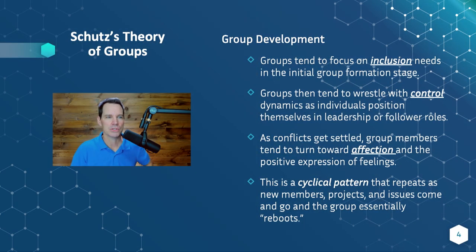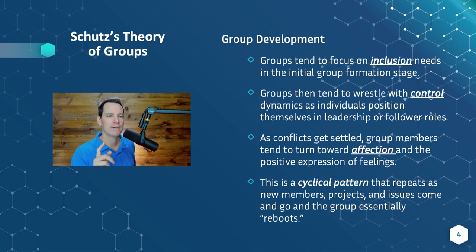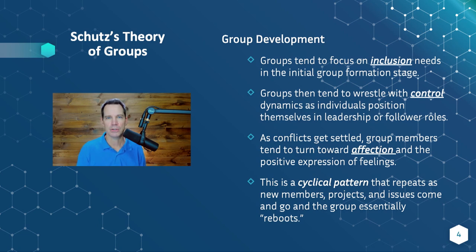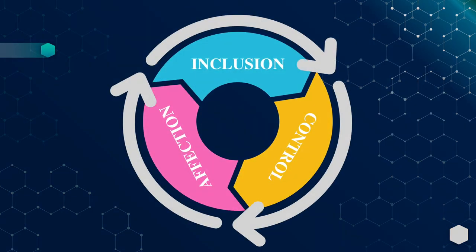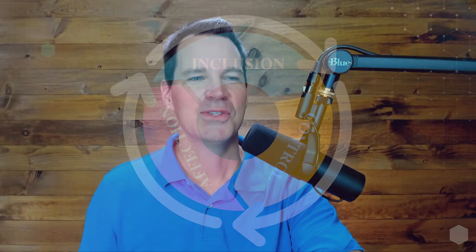There's a little more to the story, according to Schutz's research — this is tied to group development. Groups at the beginning, in the initial stages, tend to focus on inclusion needs, making sure everybody's involved and included. Then as the group starts to work on things, there's a bit more wrestling over control: who's going to be a leader, who's going to be a follower, what roles are we going to play? As that conflict gets settled, the group goes into the affection stage where people relax and begin connecting more, expressing positive feelings toward each other. It's also a cyclical pattern — anytime there are new group members, a new project, or something changes, the group essentially reboots, going back to inclusion, then control, then affection.